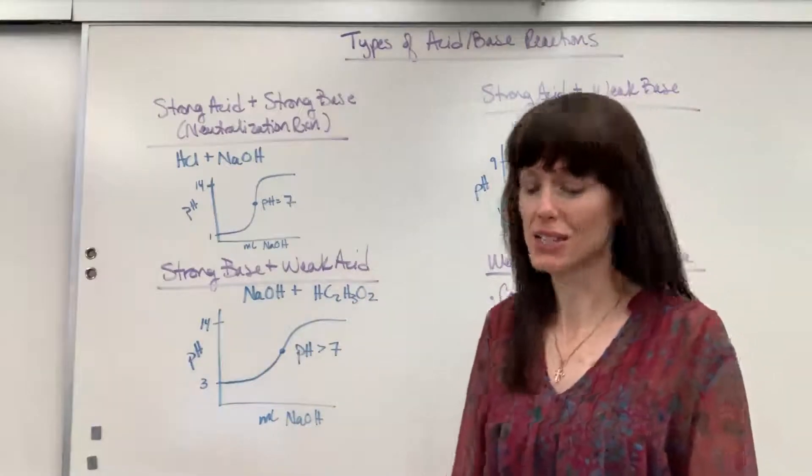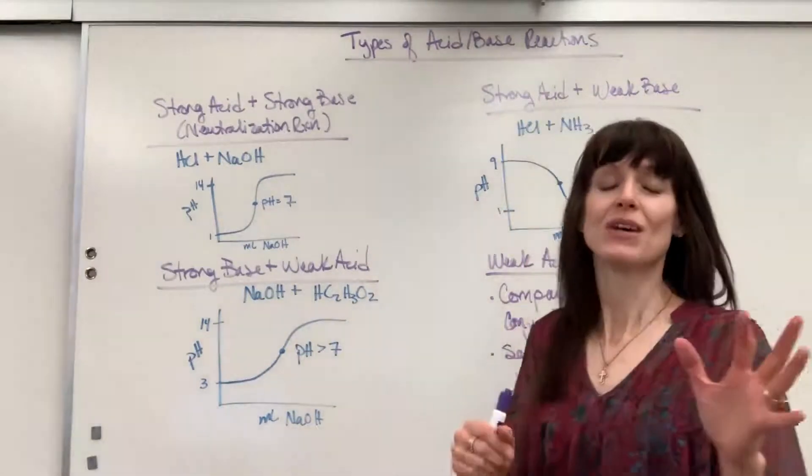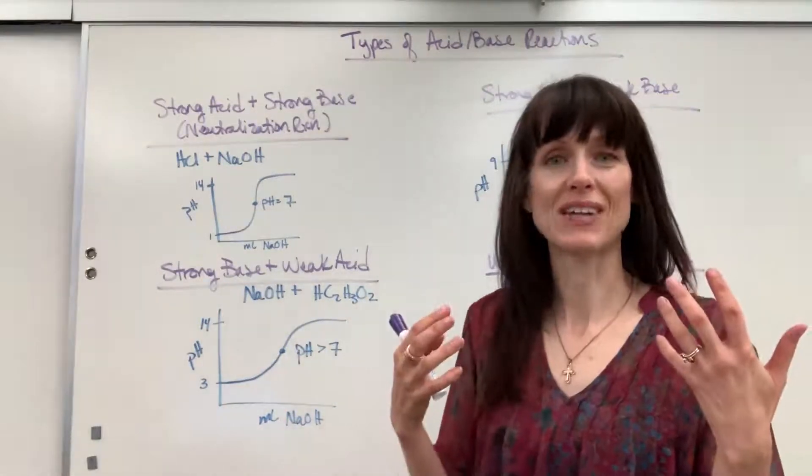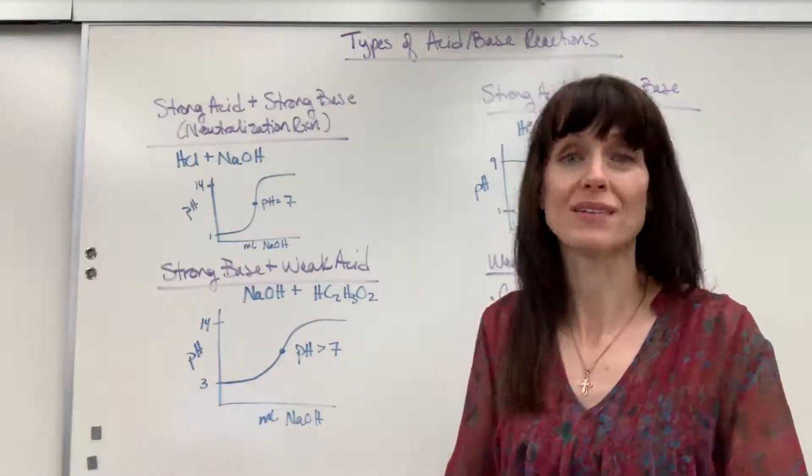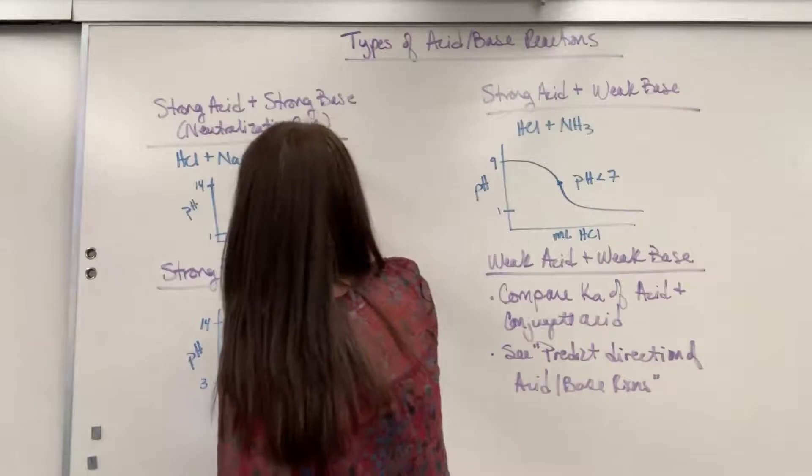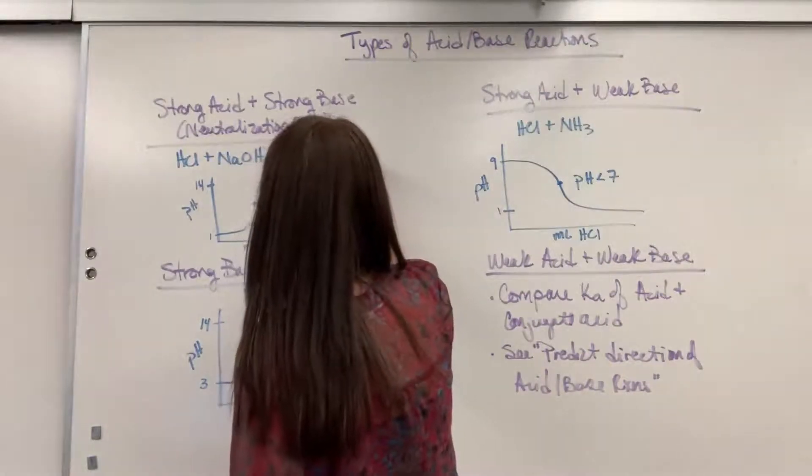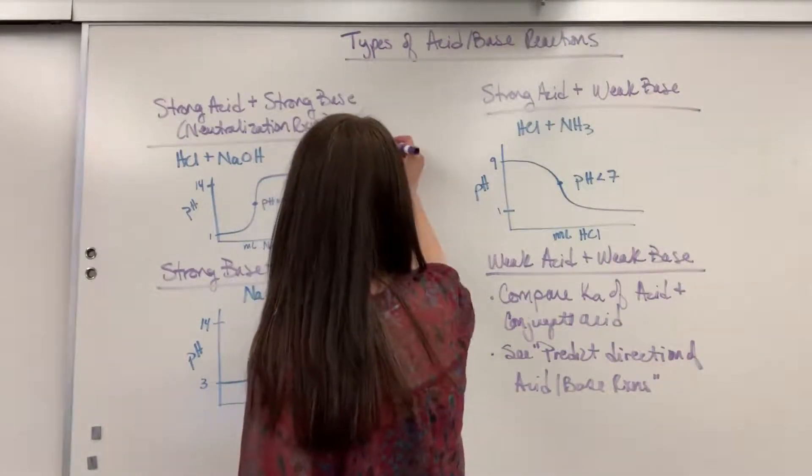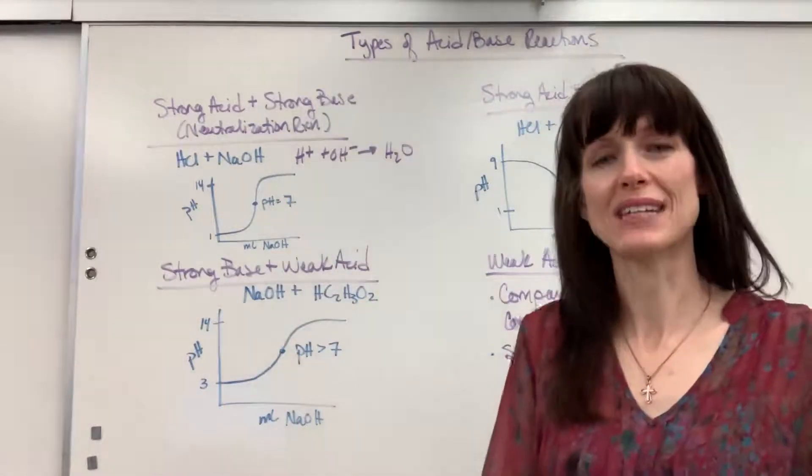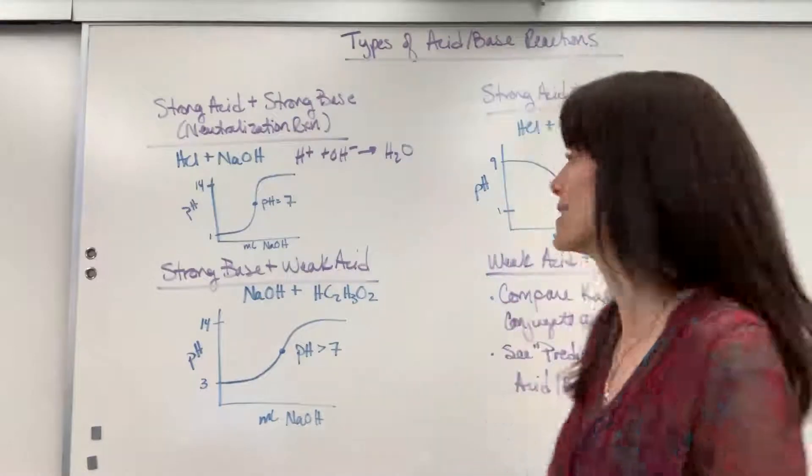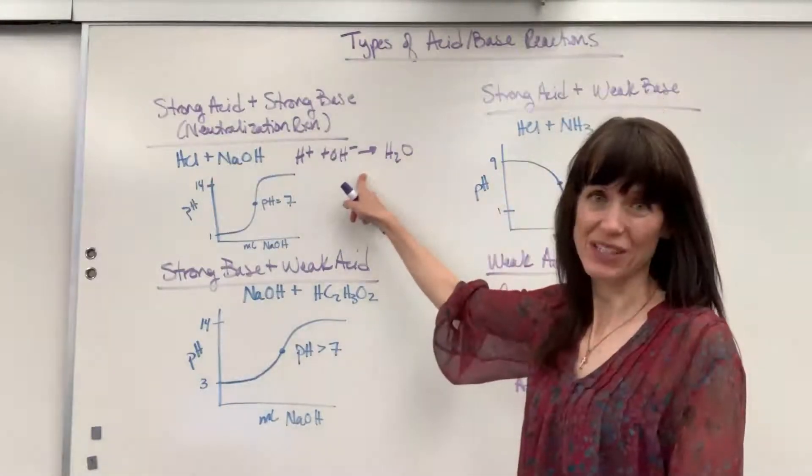Pretty cool. In a neutralization reaction, by the time you take away the spectator ions and write the net ionic equation, it is just a water reaction. It would be H+ plus OH- yields water. That's a neutralization reaction, and that happens every time you bring together a strong acid and a strong base. That is the net ionic equation.